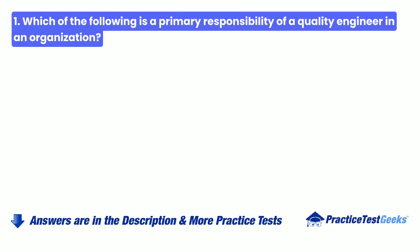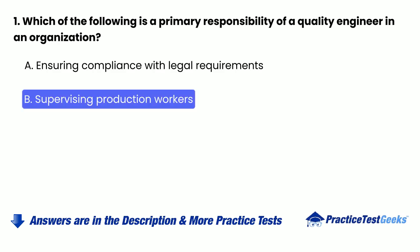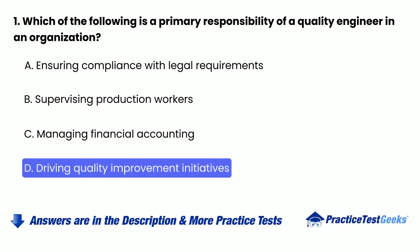1. Which of the following is a primary responsibility of a quality engineer in an organization? a. Ensuring compliance with legal requirements. b. Supervising production workers. c. Managing financial accounting. d. Driving quality improvement initiatives.